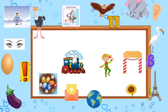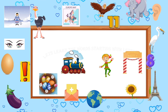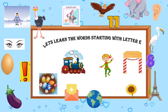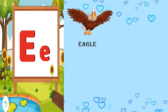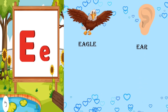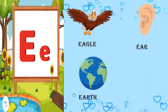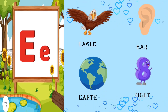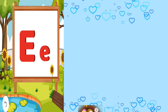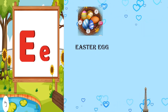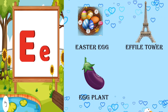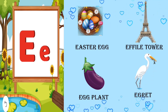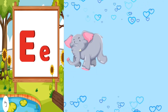Come children, let's learn about a few words that begin with the letter E. E for eagle, E for ear, E for earth, E for eight, E for Easter egg, E for egret, E for eggplant.